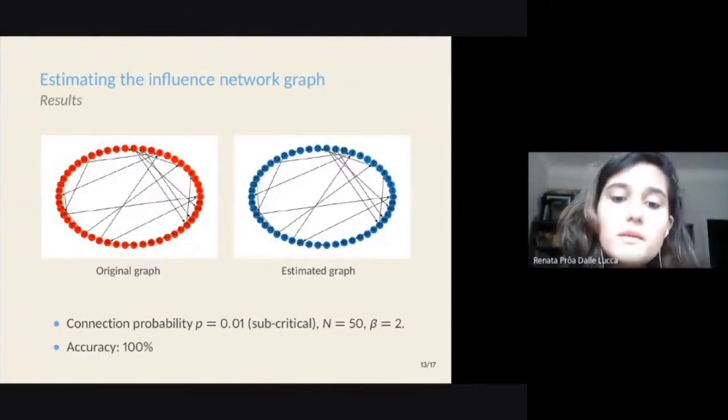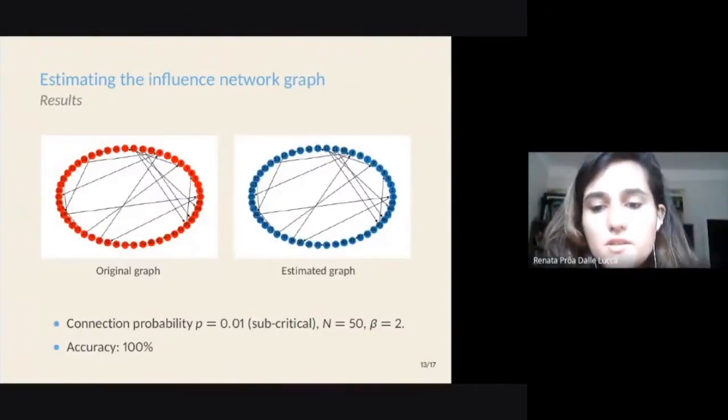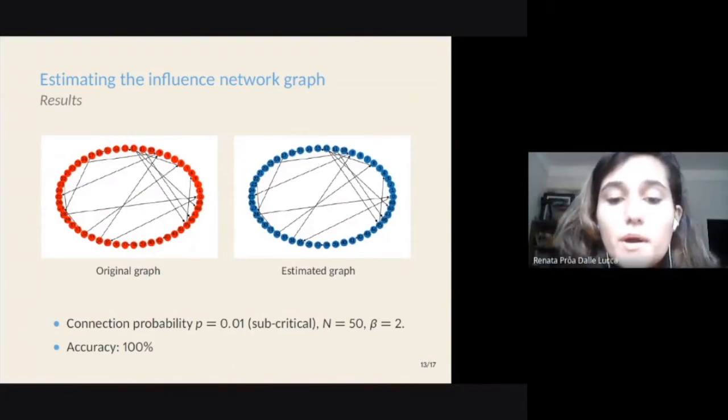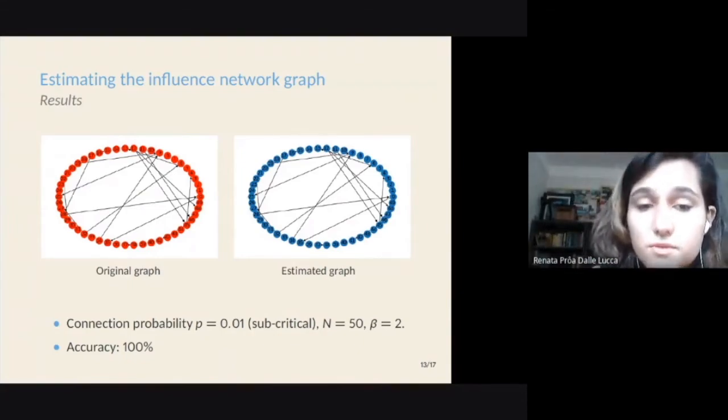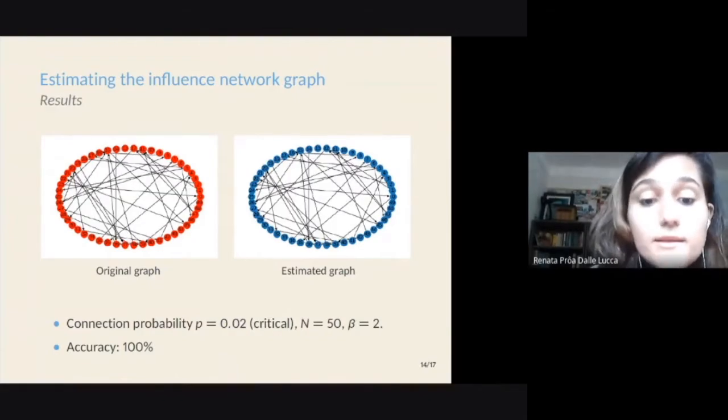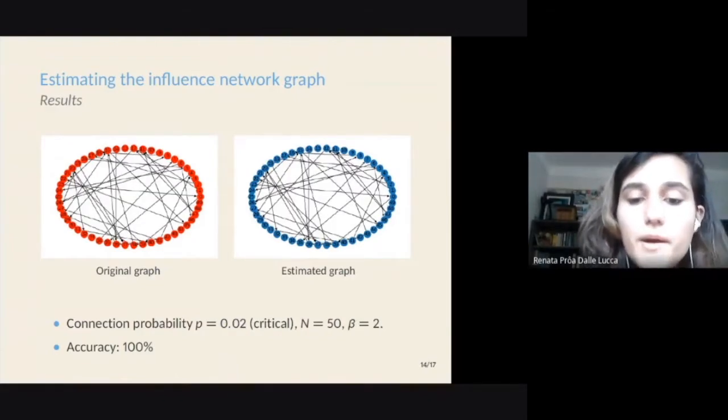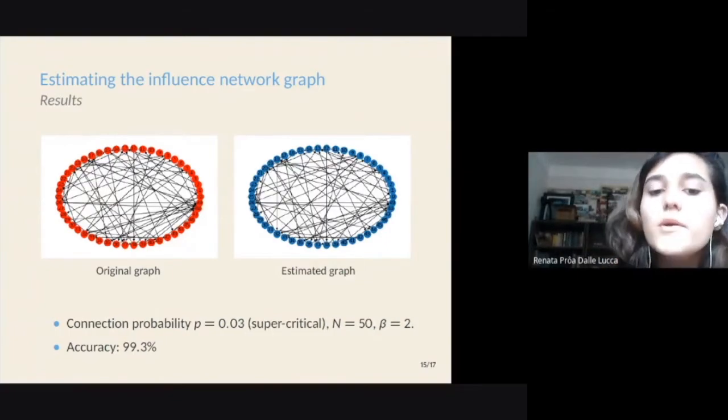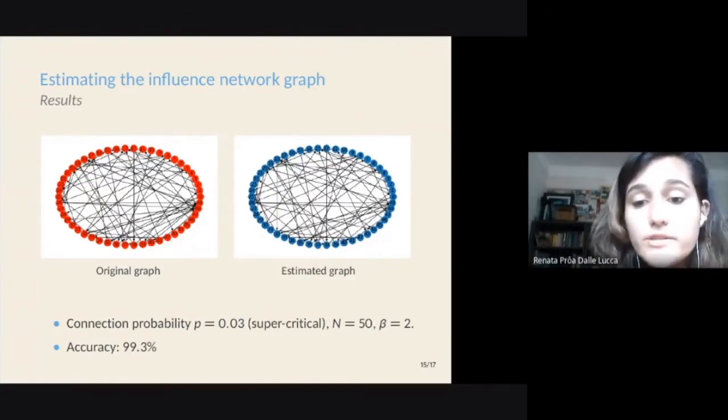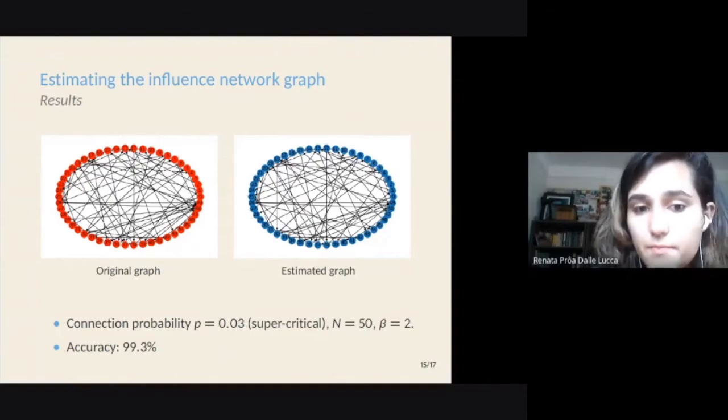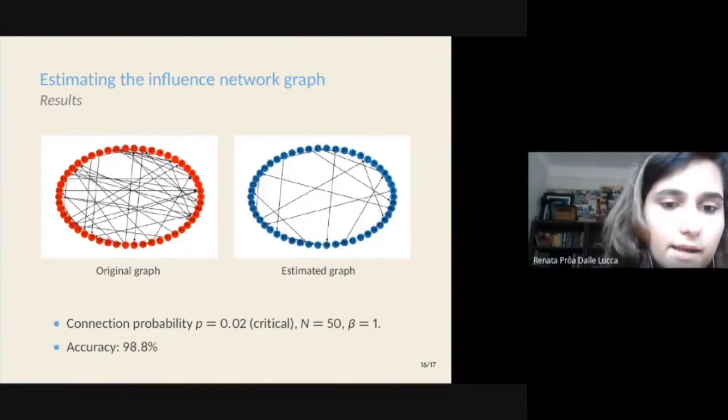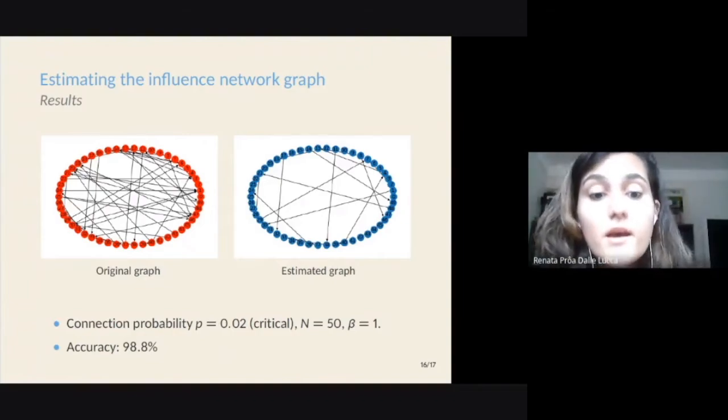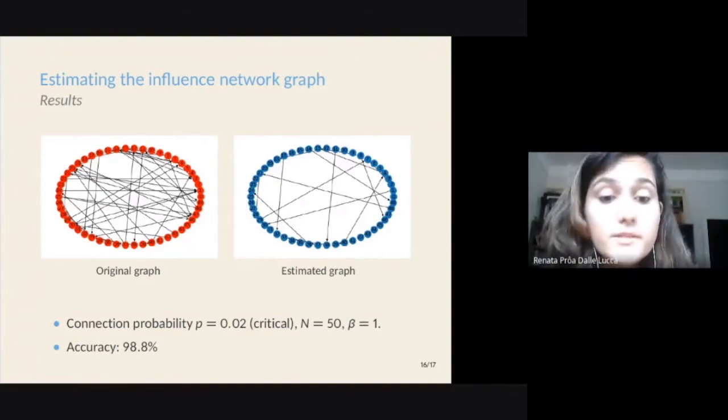By comparing the time intervals between actors' manifestations in a network described by a slightly subcritical graph, we were able to estimate a network of influences with full accuracy, and the same for a network described by critical Erdos-Renyi graphs. For a supercritical network, we obtained an accuracy of 99.3%. And interestingly, if we decrease beta, as the process becomes less deterministic, the accuracy decreases too.